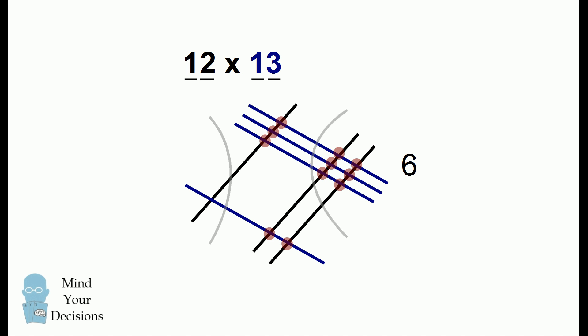In the middle, there are five intersections, and on the left there's one intersection. These numbers tell you what the answer is. So 12 times 13 is 156.